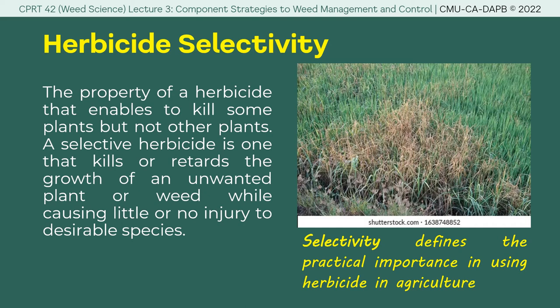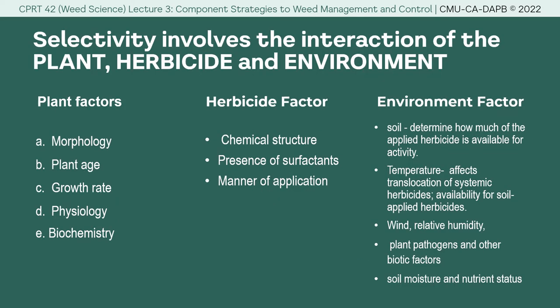Nobody in their right mind would apply herbicide to kill all plants — we need the crops, which are classified by their identified economic use or value. Selectivity involves the interaction of the plant, herbicide, and environment, with the following factors: plant factors, herbicide factors, and environmental factors, as enumerated earlier.